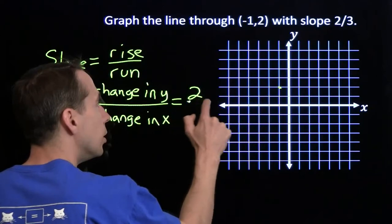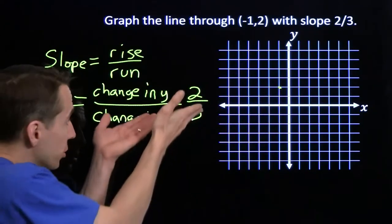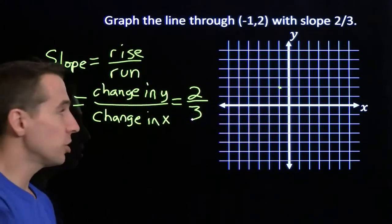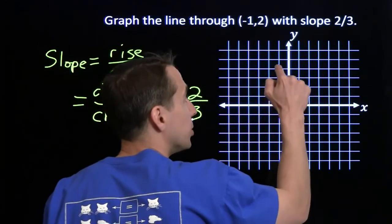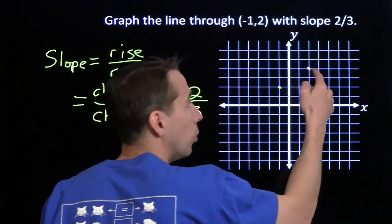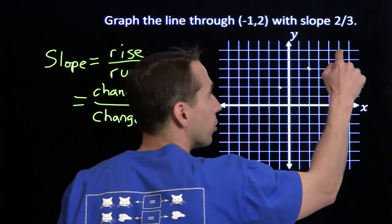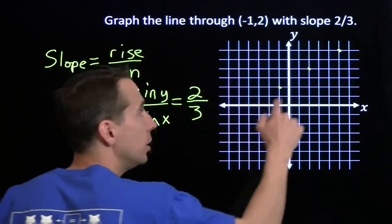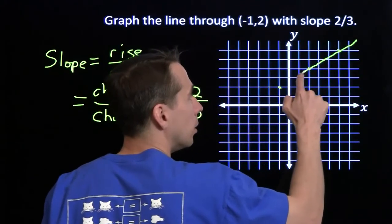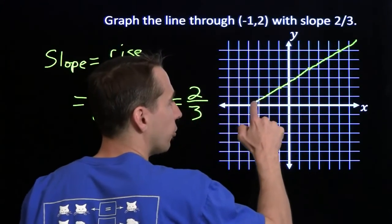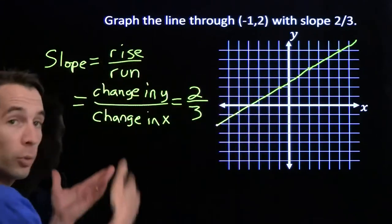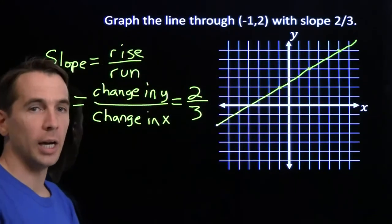The slope is 2/3, so for every 2 that y changes, x changes 3. So y goes up 2 and x goes up 3 — we rise 2 and go to the right 3. We can see our line right here. So just given a point and the slope, we can use those two together with what we know about slope to graph the line.